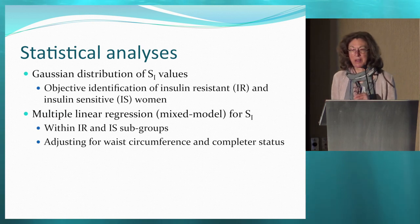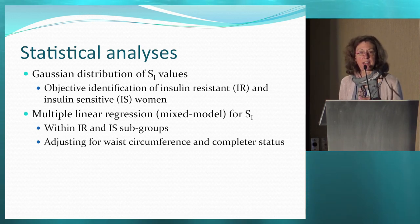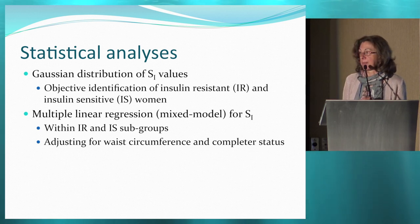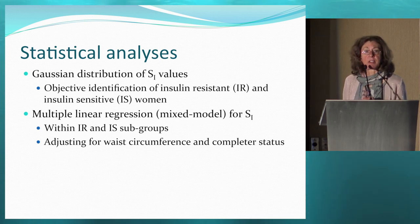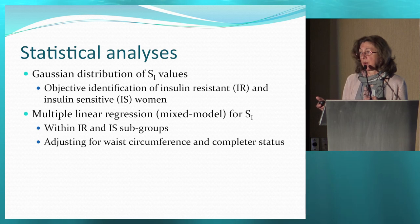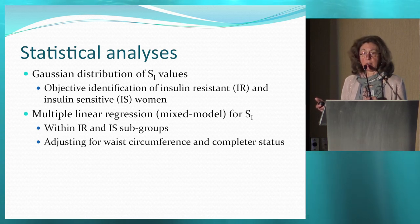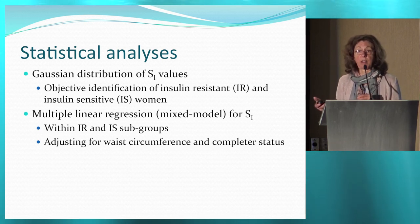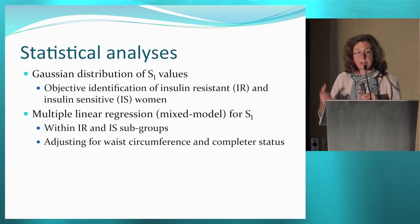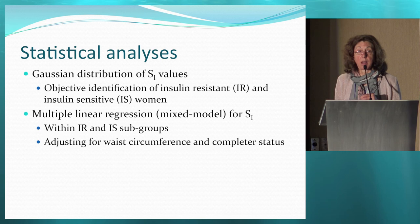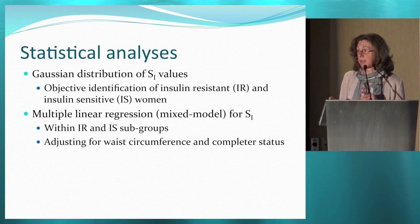For the statistical analysis, we used a Gaussian approach to objectively assess whether the women were insulin resistant or insulin sensitive. We then used mixed-effects modeling to identify predictors of insulin sensitivity across the various starch doses. We adjusted for waist circumference, since both obesity and abdominal fat are known to affect insulin sensitivity. We also adjusted for completer status — whether women completed all three phases — as an interim analysis showed a significant effect of completer status.